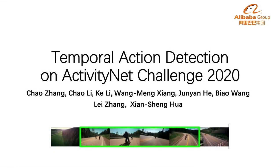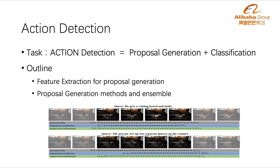This is a technical report for ActivityNet Action Detection Challenge 2020. We are the team from Alibaba Group. In this challenge, we divide action detection tasks into two parts: proposal generation and classification. Here we mainly focus on proposal generation. In the following slides, we will introduce the frame-level feature extraction and proposal generation.